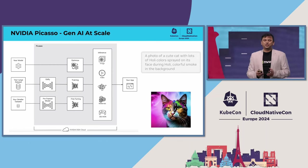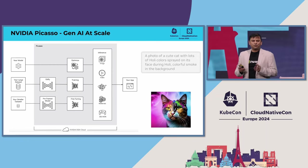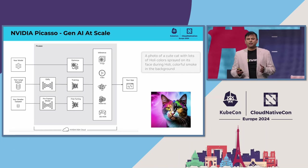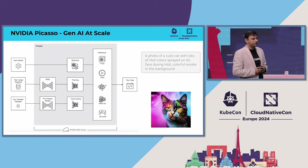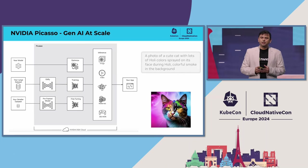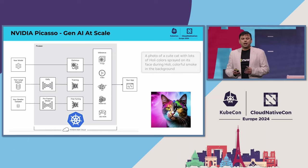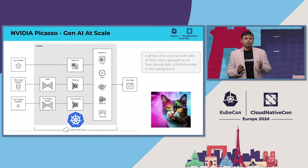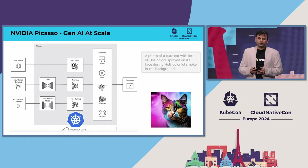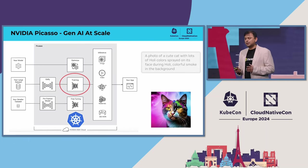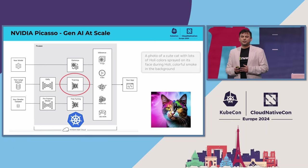Hello, KubeCon. It is such an honor to be here today as we're living in the most incredible moment of our lives. The world is discovering and falling in love with generative AI. Today, I want to highlight NVIDIA Picasso, a Gen AI foundry to build and deploy foundational models for computer vision. I feel so proud to share that Kubernetes is driving Picasso's life cycle from training to inference, and today I will focus on training and the challenges we have faced when scaling out with GPUs.